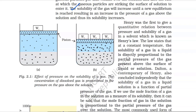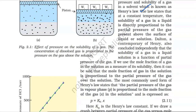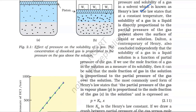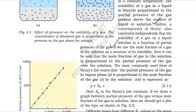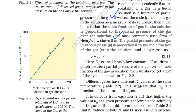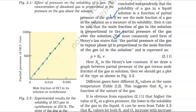Henry was the first to give a quantitative relation between pressure and solubility of a gas in a solvent, known as Henry's law. The law states that at constant temperature, the solubility of a gas in a liquid is directly proportional to the partial pressure of the gas above the surface of the liquid or solution. Dalton also independently concluded that solubility of a gas in liquid is a function of partial pressure. The most commonly used form of Henry's law states that the partial pressure of the gas in the vapour phase p is proportional to the mole fraction x in solution: p = KH·x, where KH is the Henry's law constant.